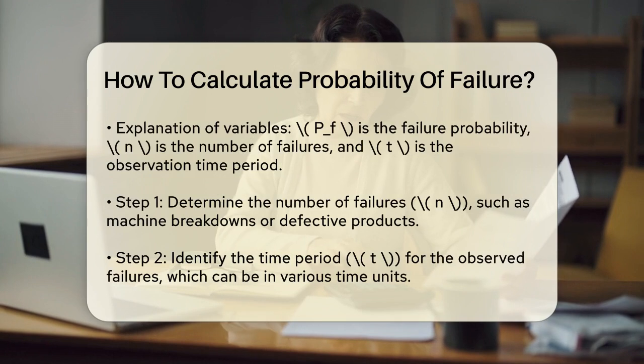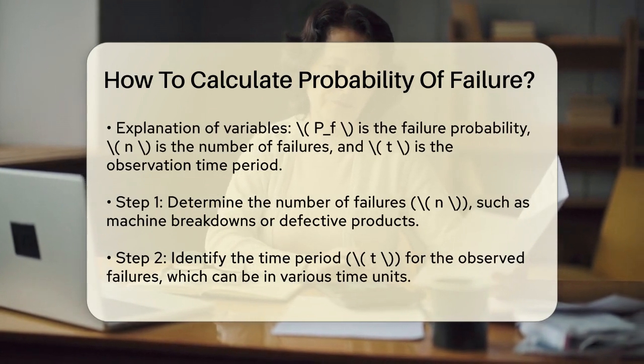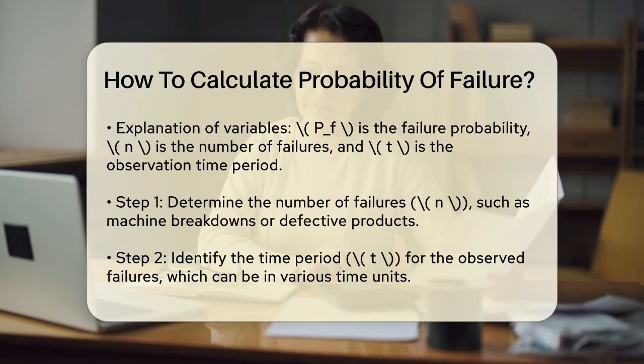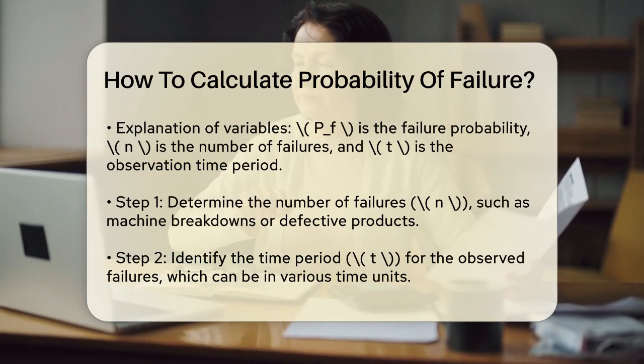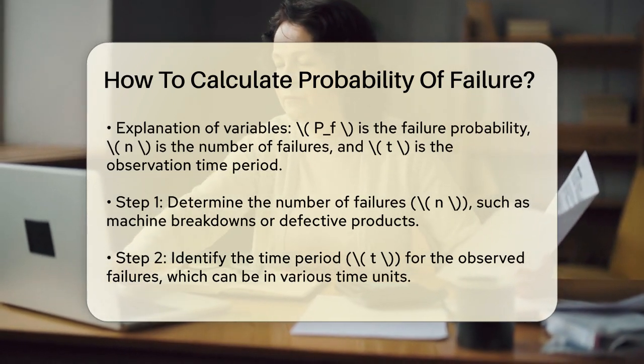Let's break it down step by step. First, you need to determine the number of failures, n, that have happened. This could be the number of times a machine broke down, or the number of defective products in a batch.